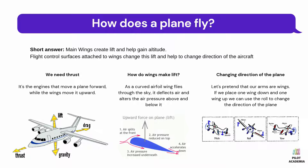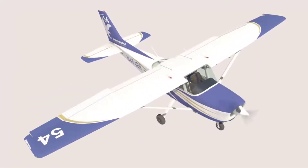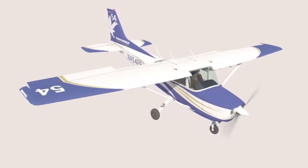A pilot has special controls — levers and buttons — to change the yaw, pitch, and roll of the plane. These are the three basic movements of a plane: pitch, roll, and yaw.